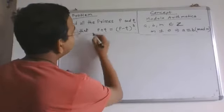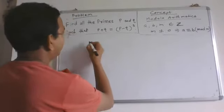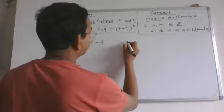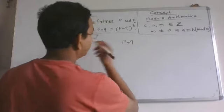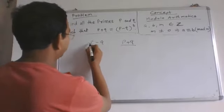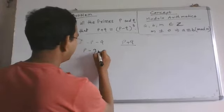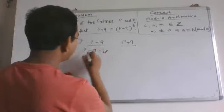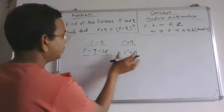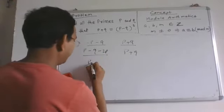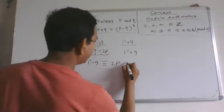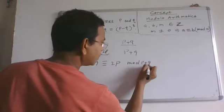Let me now write the equation in the form of modulo (p plus q). Since p plus q divides minus p minus q, and p minus q minus 2p equals minus p minus q, p plus q also divides this difference. Therefore, p minus q is congruent to 2p in mod (p plus q).